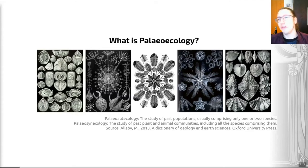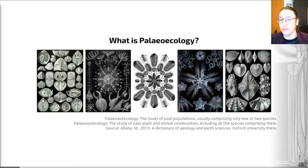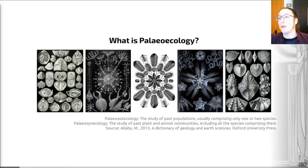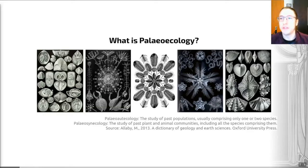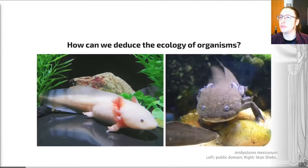The further you go back in time, the more different ecosystems become to today. What this means is that as we go deeper into the past, uniformitarianism — the idea that things happened in the past as they do today — becomes increasingly difficult to apply, because the animal communities that were around at those times have a very different makeup to those that are alive today.